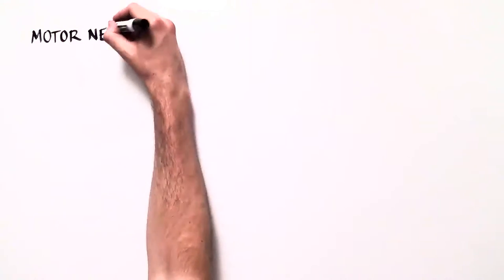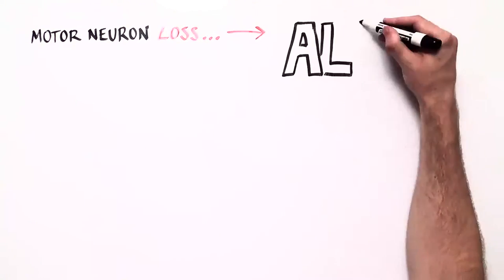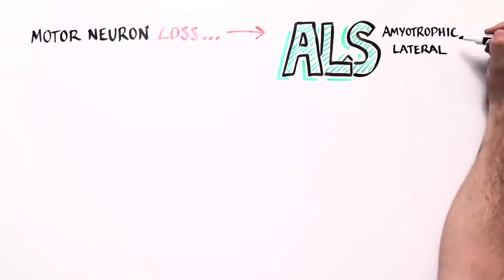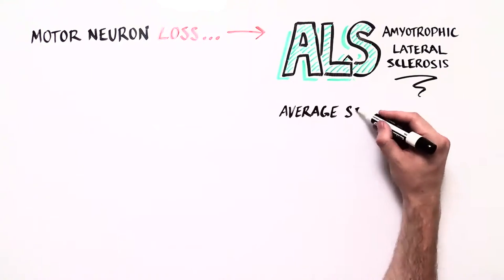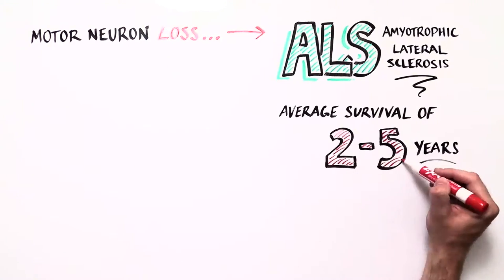This is the cause of a rare devastating disease called ALS, for amyotrophic lateral sclerosis, which has an average survival of two to five years.